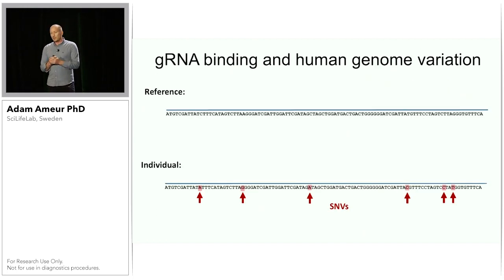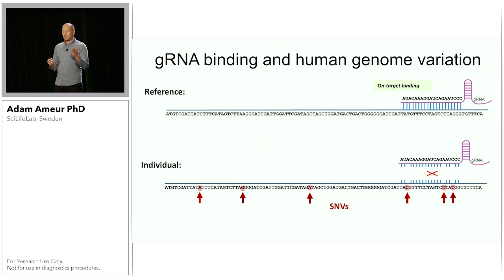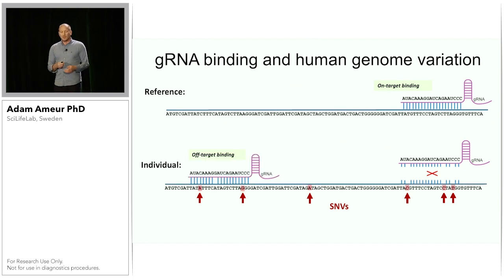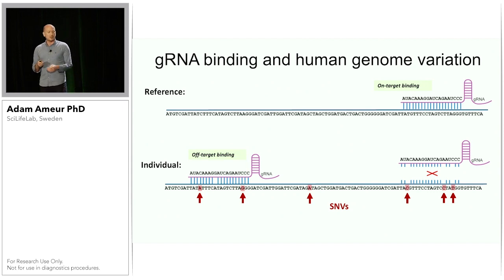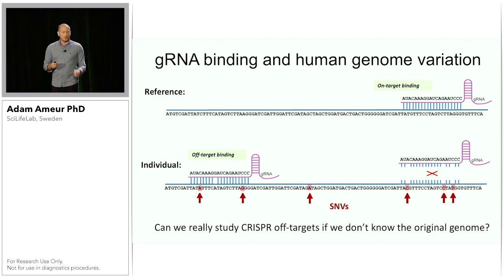This slide illustrates how we can think about matching the guide RNA to a reference genome. Let's say that the guide RNA is binding at a specific location, but in an individual that we're studying, perhaps we have a number of SNPs — represented by the arrows — which makes this guide RNA no longer bind at that location, but perhaps it's instead binding at another location in the genome that becomes more similar to the guide RNA.